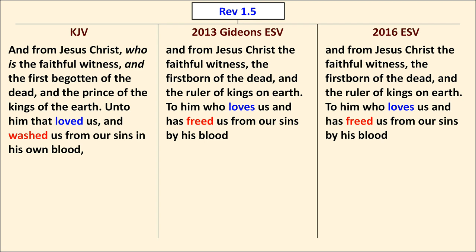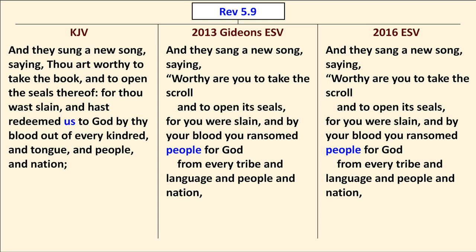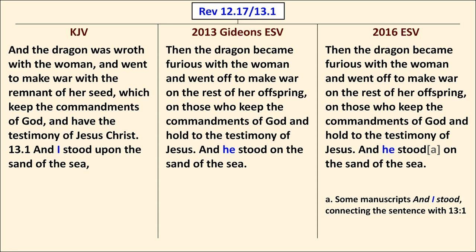In Revelation 5:9, the singers say in the King James Version "for thou wast slain and hast redeemed us to God," but the Gideon's ESV has "by your blood you ransomed people for God," agreeing with the 2016 ESV and disagreeing with the TR. In Revelation 12:17 through 13:1, the TR and King James Version begin chapter 13 with "I stood upon the sand of the sea," but the Gideon's ESV keeps that material in chapter 12 and has "he stood upon the sand of the sea," with the 2016 ESV including the TR reading in a footnote. In Revelation 16:5, the King James Version following some TR editions has "Thou art righteous, O Lord, which art and wast and shalt be," but the Gideon's ESV follows other TR editions reading "just as you, O Holy One, who is and who was" — the same reading as the ESV — so this is not a TR reading from the KJV perspective.